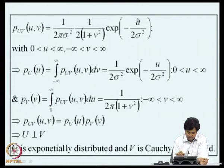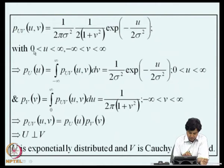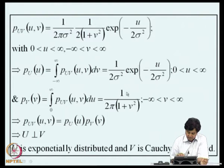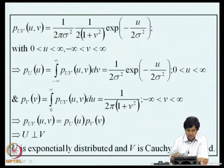Considering the joint density function of u and v in terms of the joint density function of x and y, we obtain the required joint density function. The marginal density of u, obtained by integrating over v, is an exponential distribution. The marginal density of v, obtained by integrating over u from 0 to infinity, is a Cauchy distribution. Multiplying P_u(u) and P_v(v) recovers the joint density function, showing that u and v are independent. So u is exponentially distributed and v is Cauchy distributed.